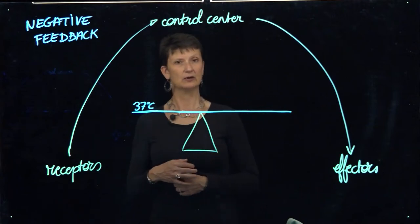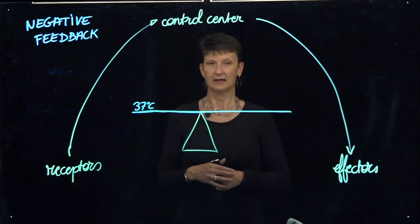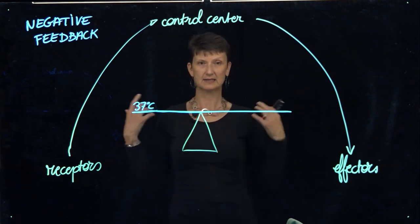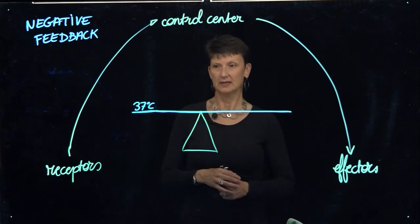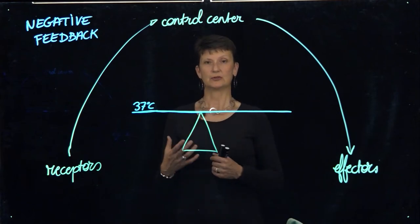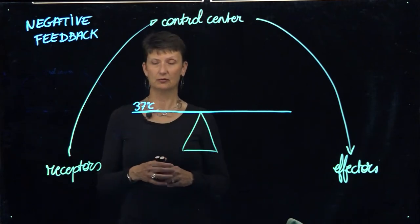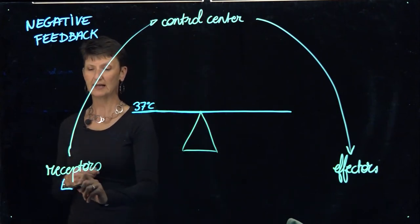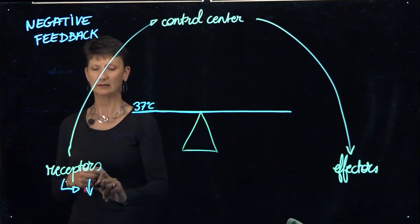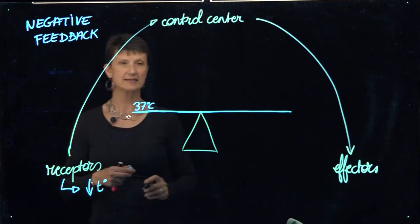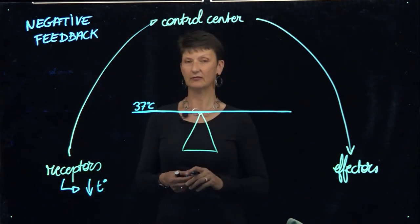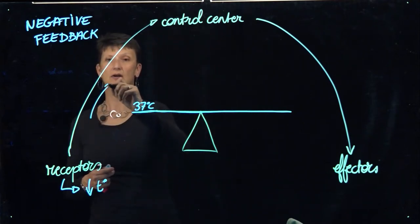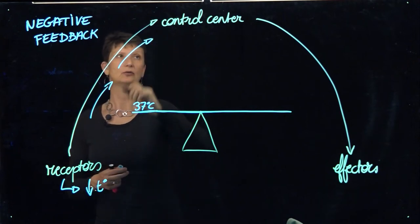Let's say we're in a room for a while in a tank top and the air conditioning is blasting. Clearly, as the temperature around us is cool or cold, our body temperature is going to start dropping as well. The receptors are therefore going to detect the drop in temperature, and that change in the environment is the stimulus that is then passed on as a signal into our brain.